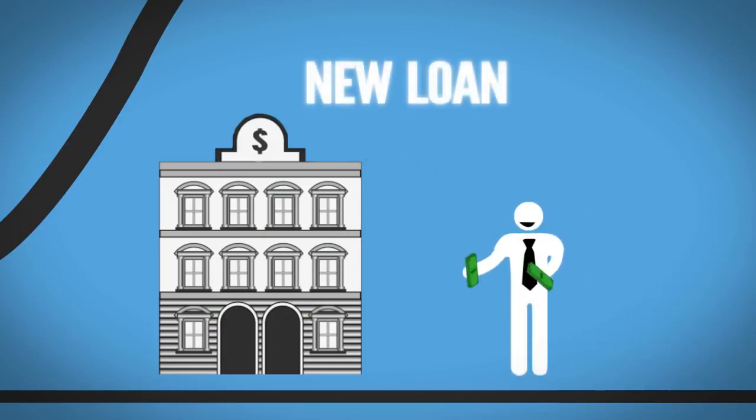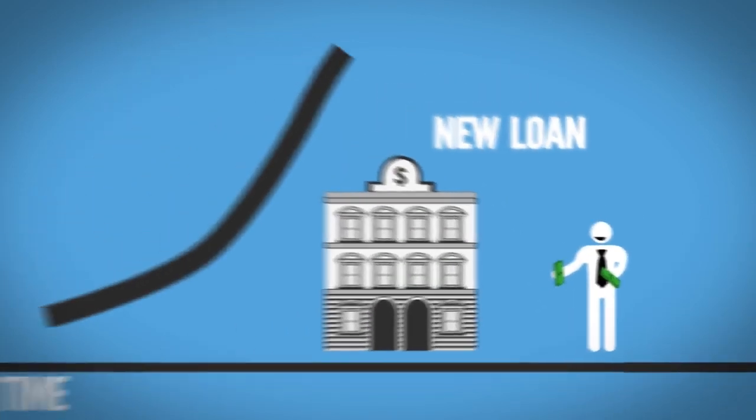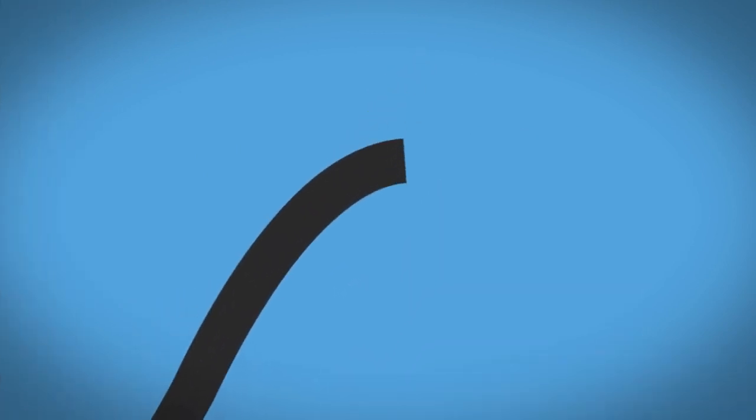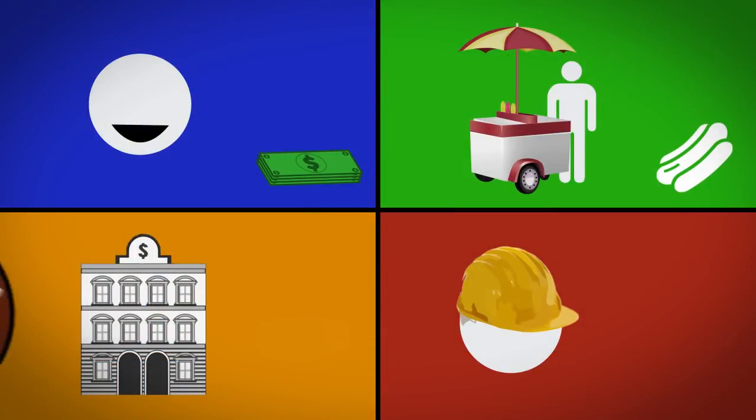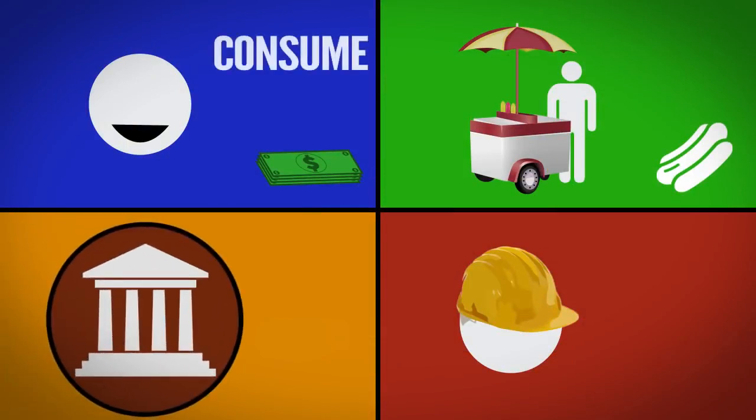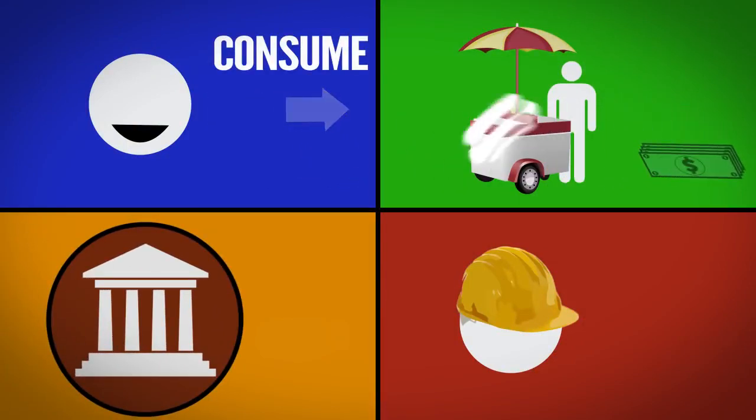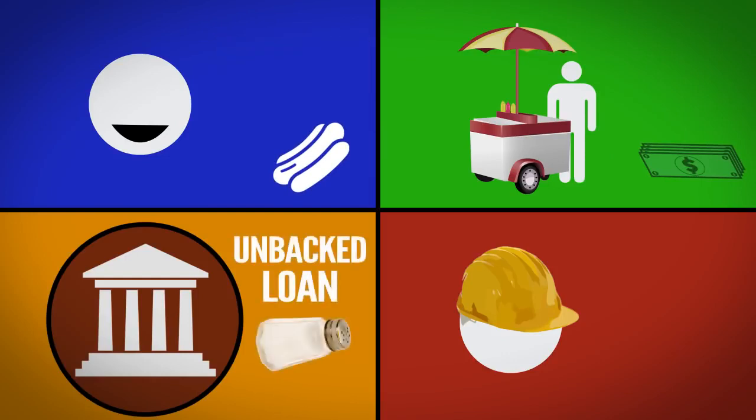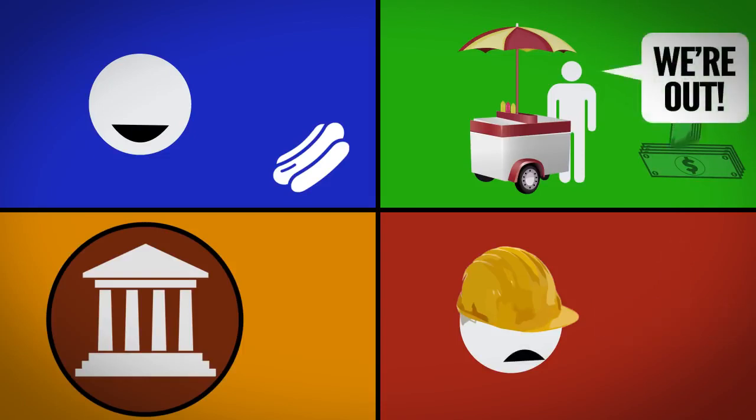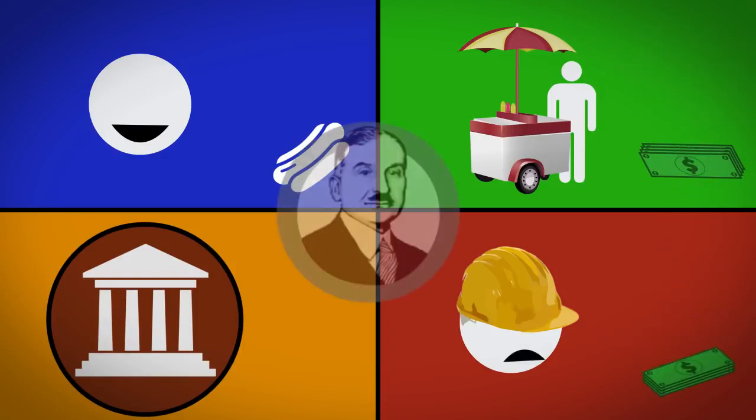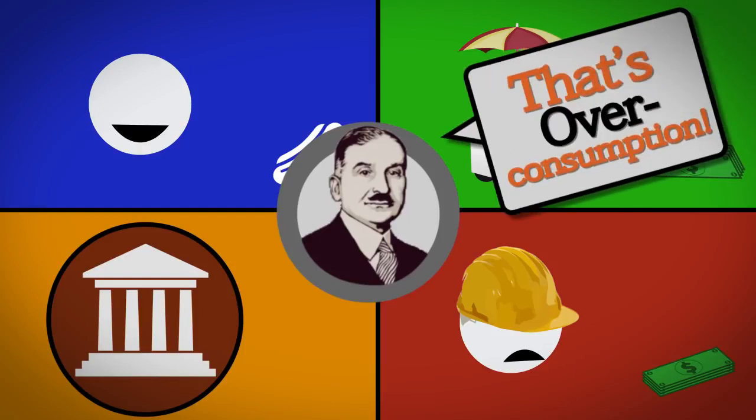Unfortunately, many of these loans turn out to be bad investments, and this boom is destined to bust from the start. Here's why: instead of what happens in a free market where one person's savings is another's consumption, loans not backed by savings result in both parties trying to consume at the same time. Legendary economist Ludwig von Mises called this overconsumption, and it leads to all kinds of problems.